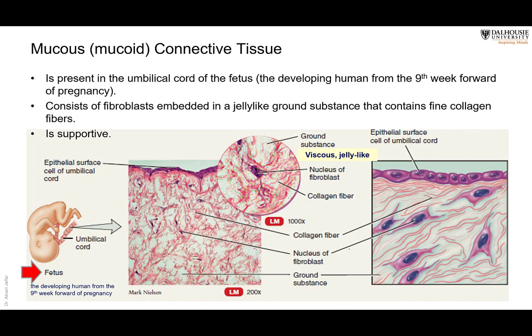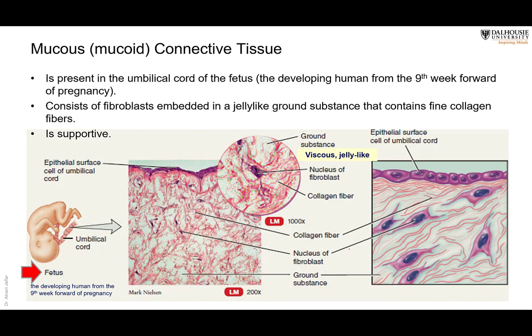After eight weeks of intrauterine life, the embryonic stage ends and the fetal stage begins. In the umbilical cord of the fetus there is mucous or mucoid connective tissue. This contains fibroblasts — the cells that produce fibers — and the fibers here are collagen fibers, not elastic fibers.